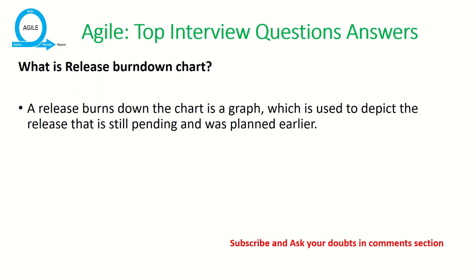The next question is: what is a release burndown chart? A release burndown chart is a graph used to depict the release that is still pending and was planned earlier. It shows what was planned, how much has been completed, and what is still pending.